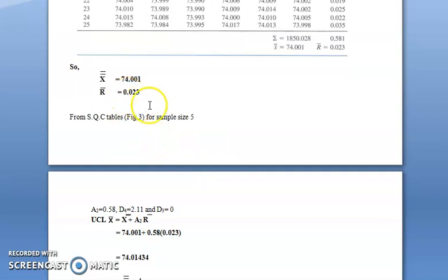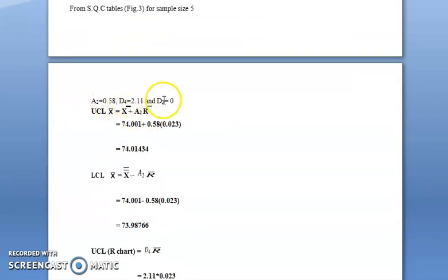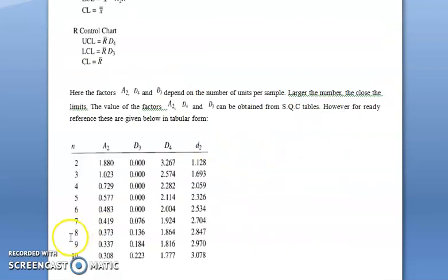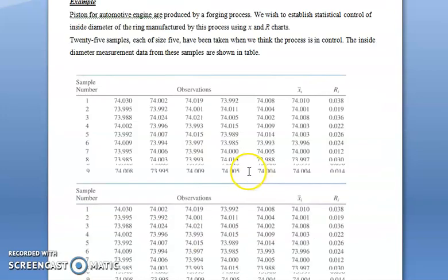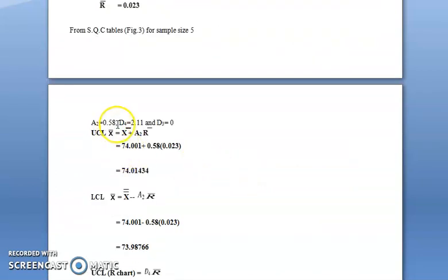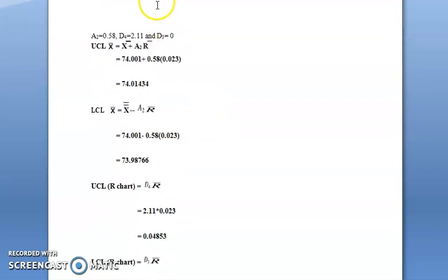Once you have x-double-bar and R-bar, select A2, D4, and D3 from the table. Since each sample size is 5, A2 is 0.577, D3 is 0, and D4 is 2.114. For the x-bar chart, the upper control limit is x-double-bar plus A2 times R-bar, and the lower control limit is x-double-bar minus A2 times R-bar, giving UCL of approximately 74.014 and LCL of approximately 73.987. For the range chart, the upper control limit is D4 times R-bar and the lower control limit is D3 times R-bar, giving UCL of 0.04 and LCL of 0.